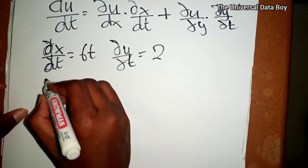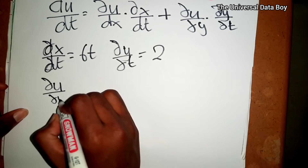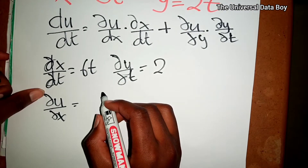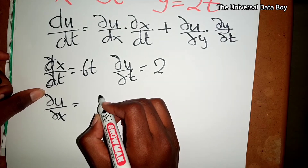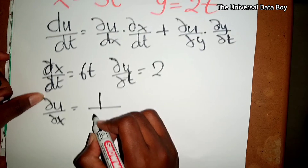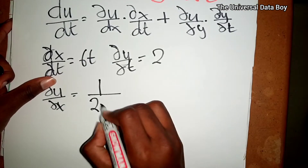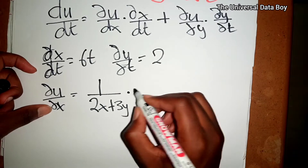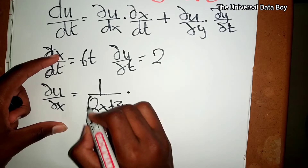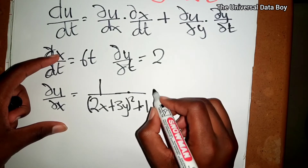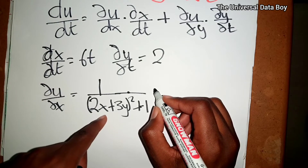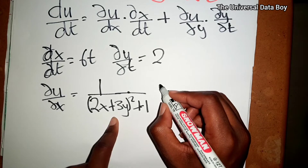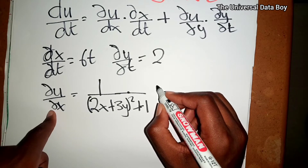Now find the partial derivative of u with respect to x. Since that's an inverse trigonometric function, it will be given by 1 over 1 plus (2x + 3y) squared, multiplied by the partial derivative of whatever is inside. Using u-substitution, the partial derivative of the inside with respect to x is just 2.